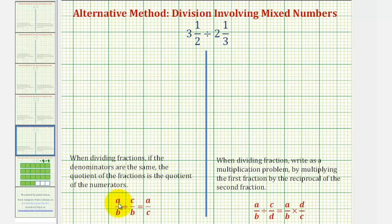Notice here if we have a over b divided by c over b, this is equal to a over c or a divided by c. The reason this works is because if we have a common denominator, all the pieces are the same size and therefore we have a pieces divided by c pieces, which would just be a divided by c.